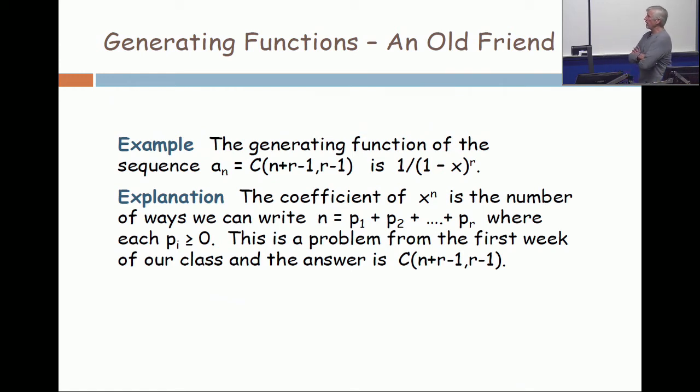Now let's visit an old friend back from week one of this course. The generating function of the sequence a_n equals C(n+r-1, r-1) for a fixed value of r is 1 over (1-x)^r.